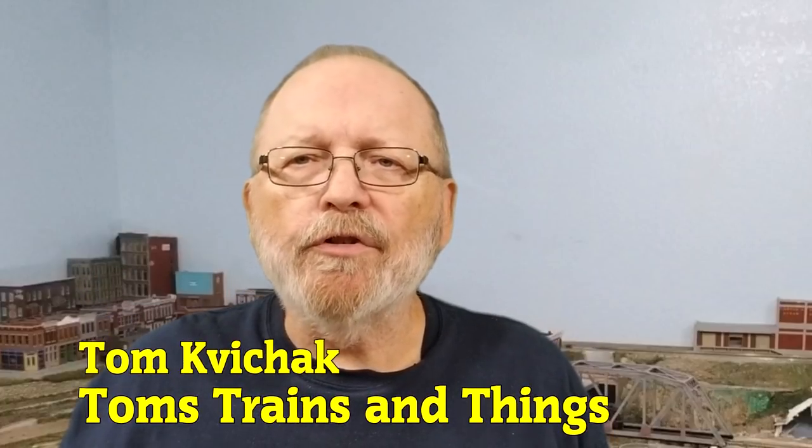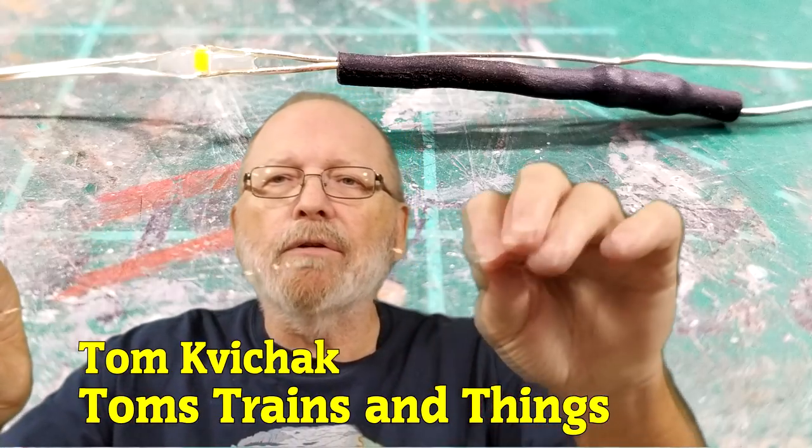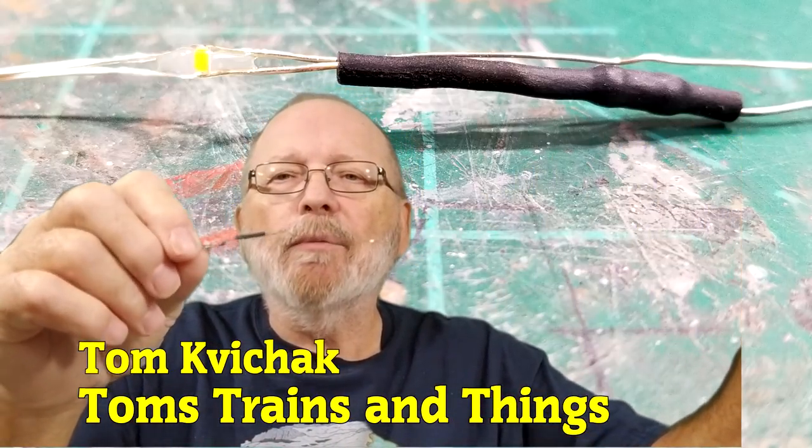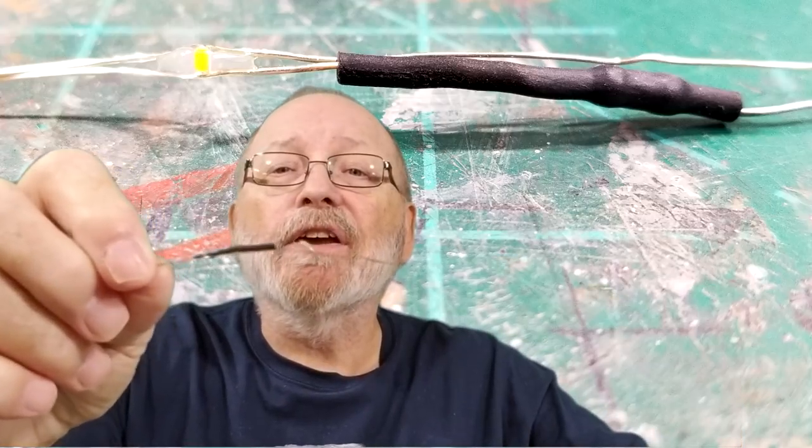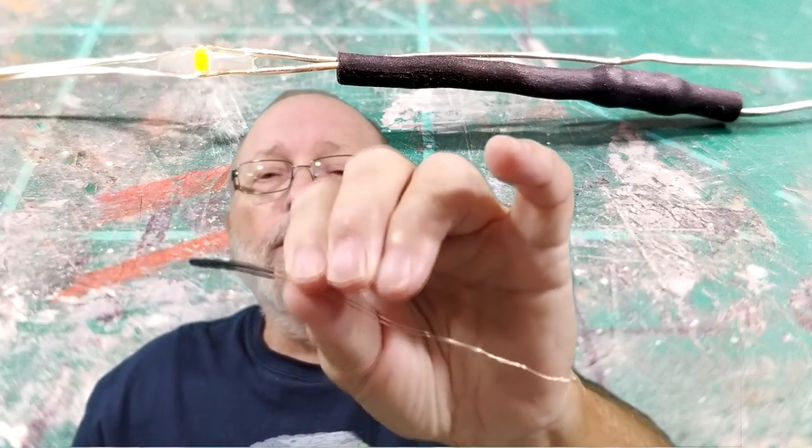Hi, I'm Tom Kovitchak and this is Tom's Trains and Things. We're gonna learn something today about LED lights. I got four of them right here that I already made up. I got a resistor in here and I put some shrink tubing over top of it. Let's get started and I'll show you how I do it.